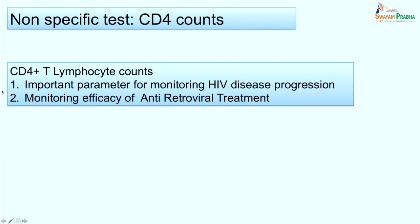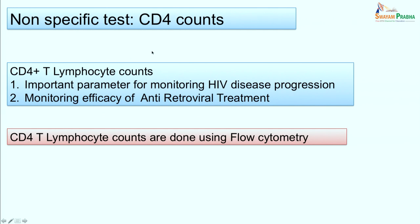The non-specific test used for disease monitoring is CD4 count. CD4 counts are an important parameter for monitoring HIV disease progression and the efficacy of antiretroviral treatment. The CD4-to-CD8 ratio is also used. CD4 T lymphocyte counts are measured using flow cytometry.